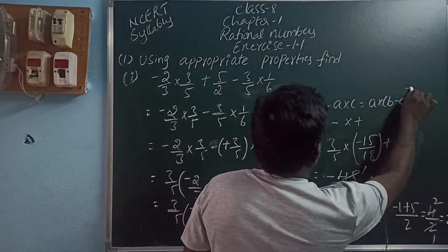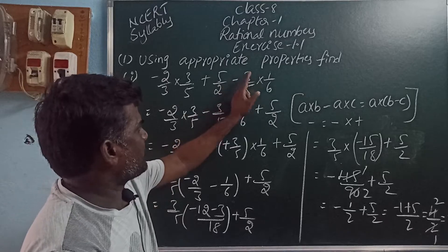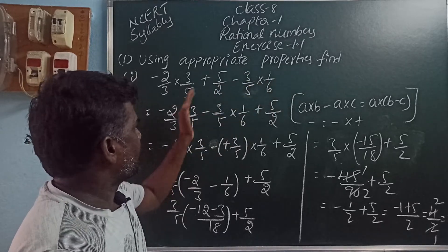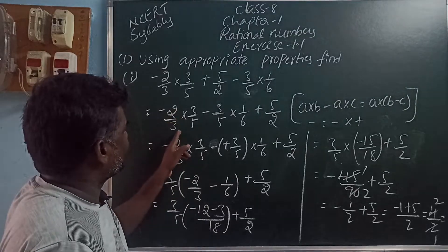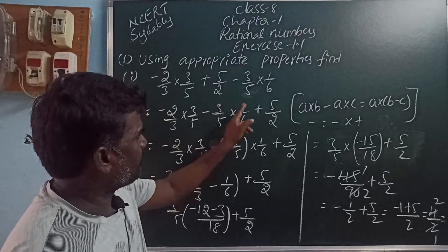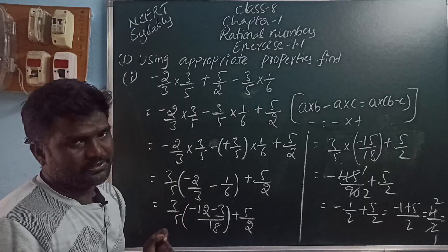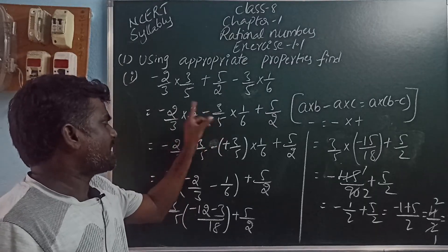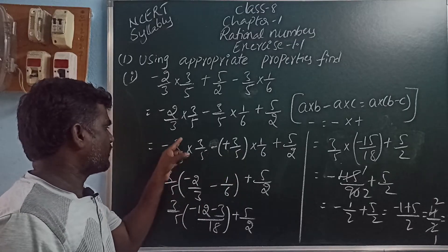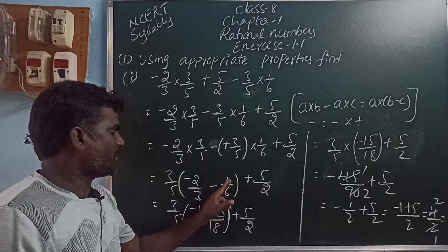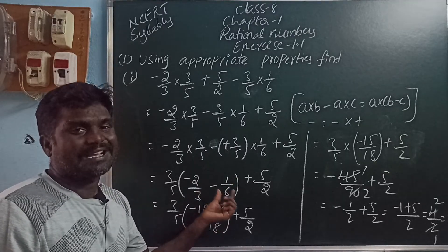Distributive property was used at the start: minus 2 by 3 into 3 by 5 and minus 3 by 5 into 1 by 6. We wrote the first term and last term on one side: minus 2 by 3 into 3 by 5 minus 3 by 5 into 1 by 6 plus 5 by 2. In these two terms the common is 3 by 5, so 3 by 5 is taken outside leaving minus 2 by 3 minus 1 by 6. These two fractions can be solved by cross multiplication or LCM.